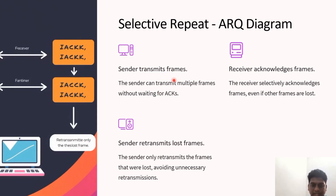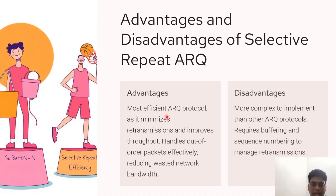Once frame 2 is received, the receiver has the acknowledgements of all previous frames, saving a lot of time compared to previous methods. In Selective Repeat, the sender transmits frames and the receiver acknowledges them even if other frames are lost; the sender retransmits only the lost frame instead of the entire window. This increases efficiency by minimizing retransmissions and increases throughput, though the complexity is somewhat increased as it requires buffering and sequence numbers to manage retransmissions. Thank you for watching — see you in the next video.